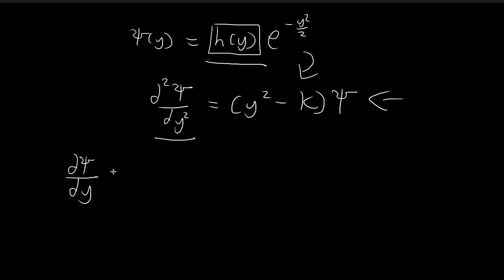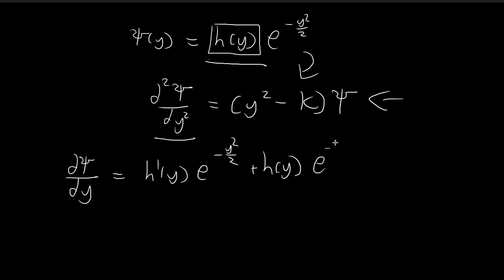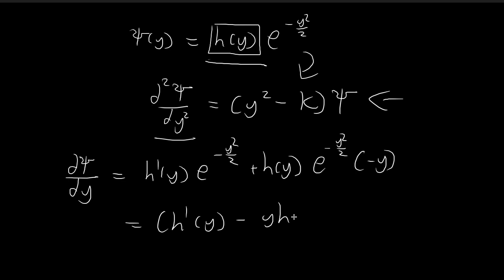So d xi dy is equal to — using the product rule — h prime of y times e to the power of negative y squared over 2, plus h of y times the derivative of that exponential term, which becomes something like this due to the chain rule. We can rearrange this slightly by grouping up some of the terms, pulling the e term out of the bracket.